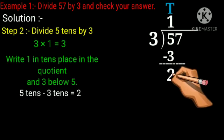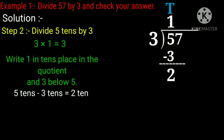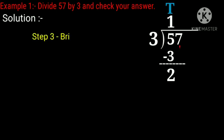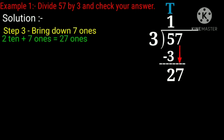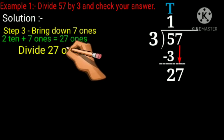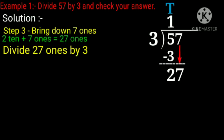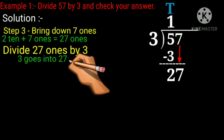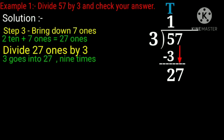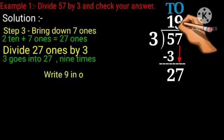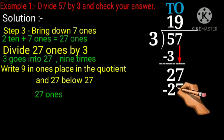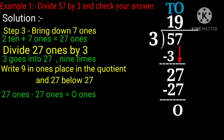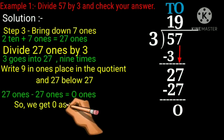5 minus 3 equals 2. Now bring down 7 ones. 2 and 7 will make 27. Divide 27 ones by 3. We know that 3 goes into 27 nine times, or 3 nines are 27. Write 9 in ones place in the quotient and 27 below 27. 27 minus 27 equals 0. So we get 0 as remainder.